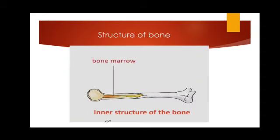Now we will move on to the next part: the structure of bones. As you can see in the diagram on your screen, bones are some of the hardest structures in the body; however, they are soft on the inside. Many of the long bones have a hollow space in the middle filled with a soft, jelly-like substance called bone marrow. The blood cells are produced in this bone marrow.